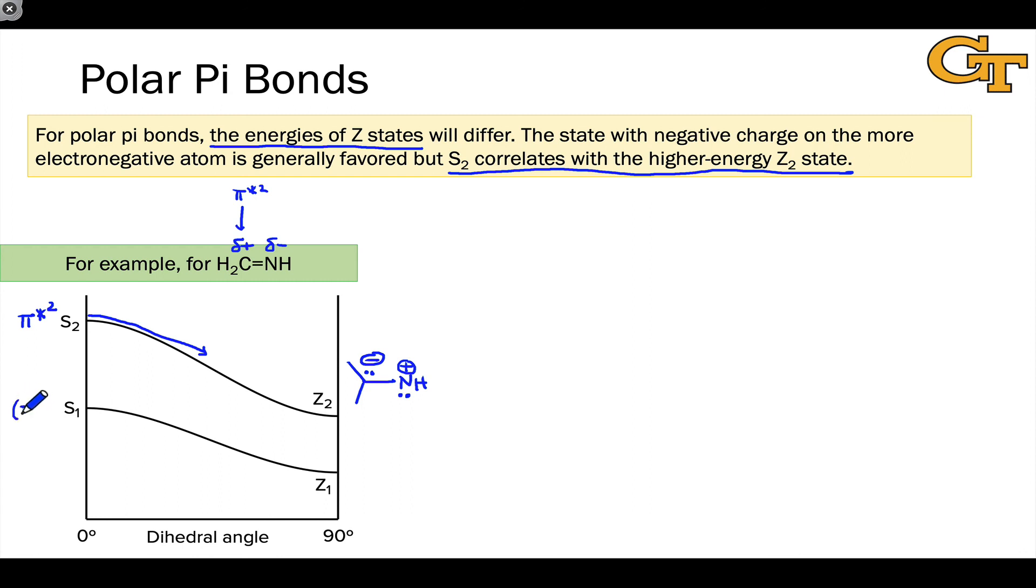In the s1 state, which is pi pi star in character, we still have a good bit of electron density on the imine nitrogen. So this state, as the rotation happens, correlates with the z state where we have the usual positive charge on carbon and negative charge on the more electronegative nitrogen atom. In many ways, this picture mirrors what we saw for polarized sigma bonds. The s2 state results in polarization that is very much opposite our chemical intuition based on ground state ideas, while the s1 state tends to lead to the typical ground state polarization that we're used to, just in more extreme form.